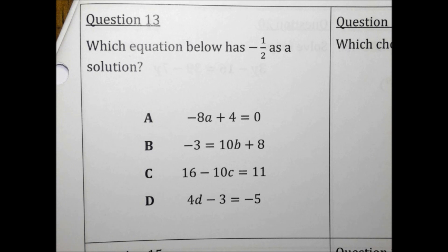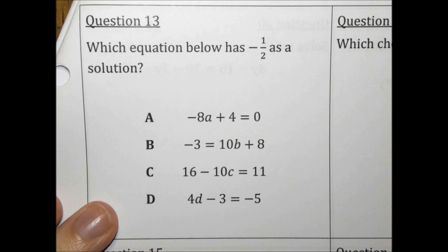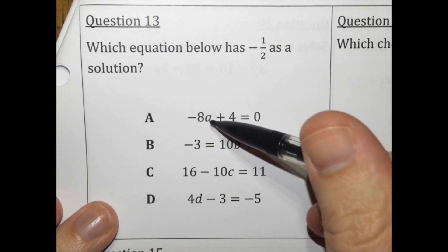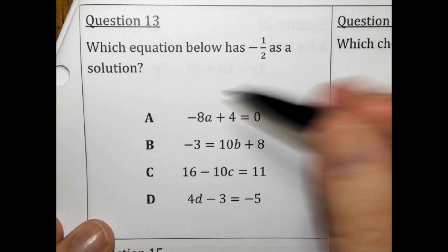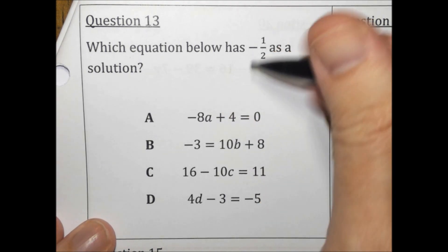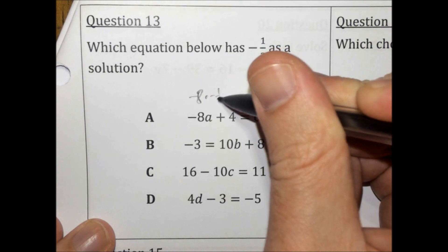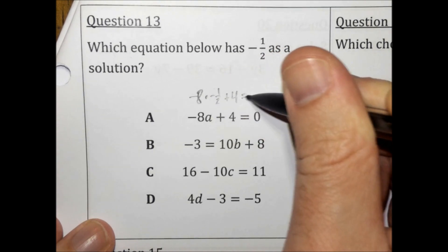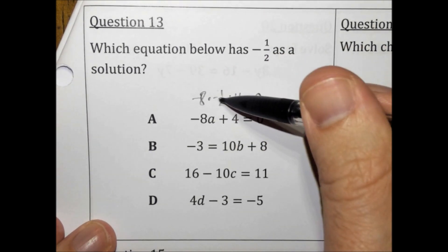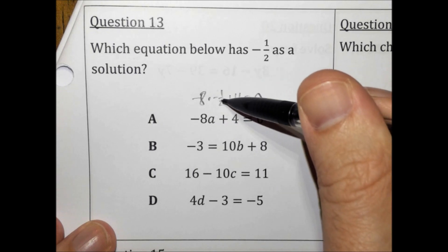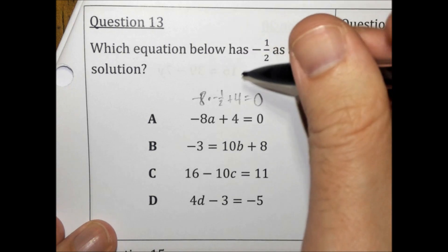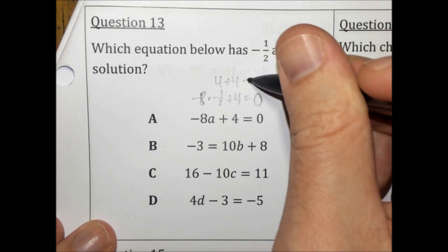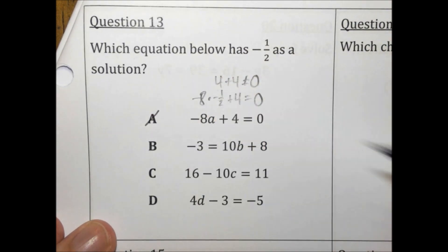Which equation below has negative 1 half as a solution? You could solve all these equations, or you could plug negative 1 half into each equation and see if any of them are true. For choice A: negative 8 times negative 1 half plus 4 equals 0. Negative 8 times negative 1 half is positive 4, and positive 4 plus 4 is not 0. So it's not choice A.